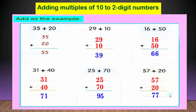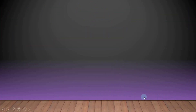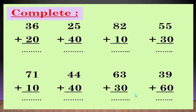نشوف سؤال كمان: complete - 36 plus 20. we begin with the ones - بابتدي بالـ ones على ايدي اليمين. الـ ones مع الـ ones والـ tens مع الـ tens. 6 plus 0 equal 6. 3 plus 2 equal 5. the result is 56.